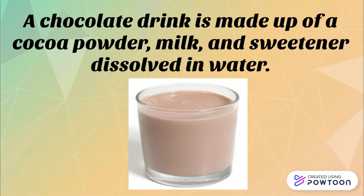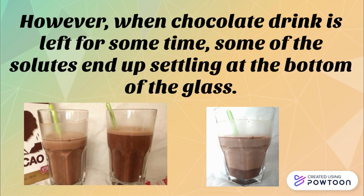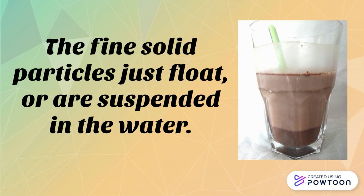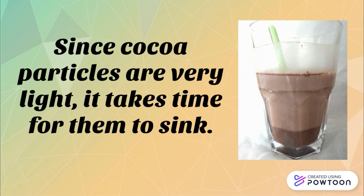For example, a chocolate drink is made up of cocoa powder, milk, and sweetener dissolved in water. However, when the chocolate drink is left for some time, some of the solutes end up settling at the bottom of the glass. This is because the cocoa powder does not fully dissolve in water. Since the cocoa particles are very light, it takes time for them to sink. The chocolate drink is a suspension.